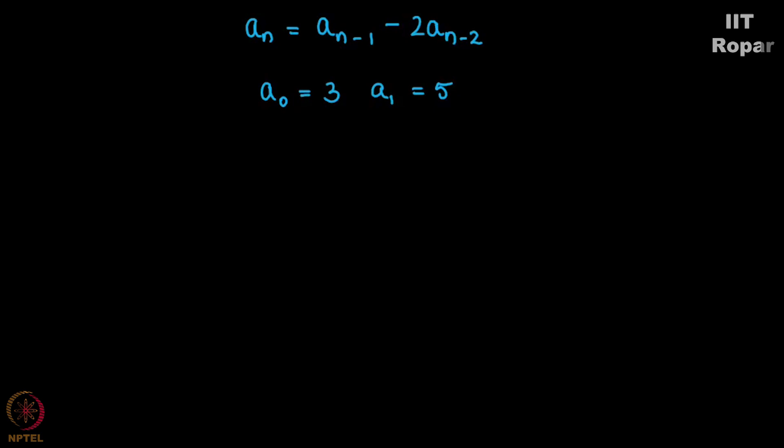A2 can be obtained by substituting 2 for n. For n = 2, if I substitute n as 2, the recurrence relation becomes A2 = A1 - 2A0. You see, to obtain A2 we must first find out A1 and A0.